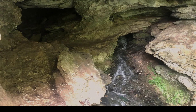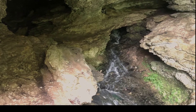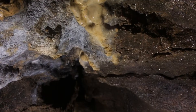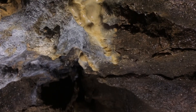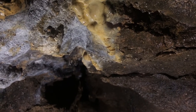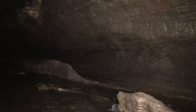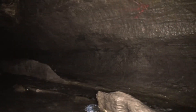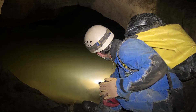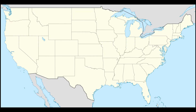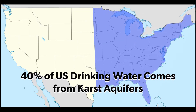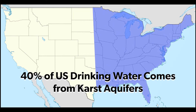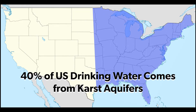In karst regions, water drains through cracks in the ground, slowly carrying away tiny particles of rock. This leads to the creation of caverns and underground aquifers. In the U.S., 40% of groundwater used for drinking comes from karst aquifers. It's important to keep this water safe and clean.